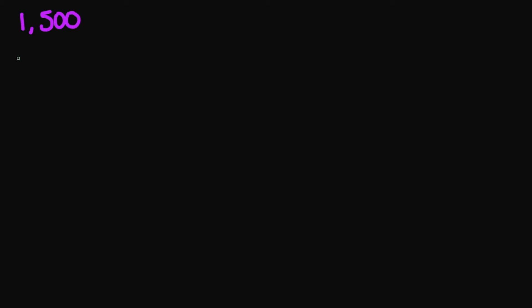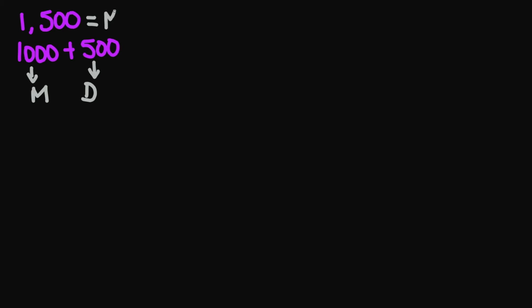Let's look at our first example. Let's say we have one thousand five hundred. Based on our chart symbol, we're going to separate this number into one thousand plus five hundred. So the Roman numeral for one thousand is M, and the Roman numeral for five hundred is D. So your final answer is going to be MD.